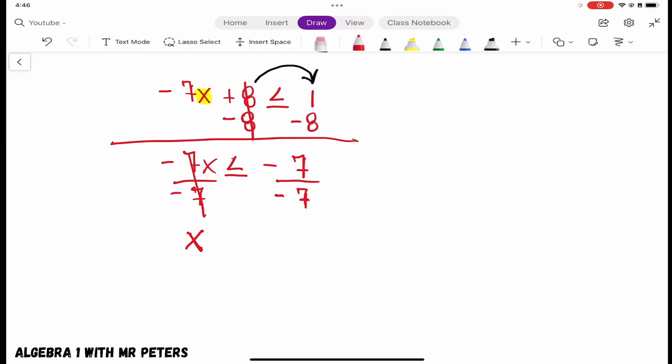And guys, this is what I'm talking about right here. So you see how our x was negative and we divided. Negative 7x. Because we divided by negative x, our inequality symbol is going to flip.